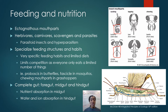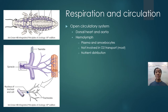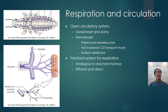The insect gut is complete, consisting of a foregut — including the mouth, esophagus, and crop — a midgut responsible primarily for nutrient absorption, and a hindgut responsible for reabsorption of ions and water. Insects have an open circulatory system, using their dorsal heart and aorta to pump hemolymph throughout the body. The primary purpose of hemolymph is to distribute nutrients, not oxygen — gas exchange is handled instead by the tracheal system.